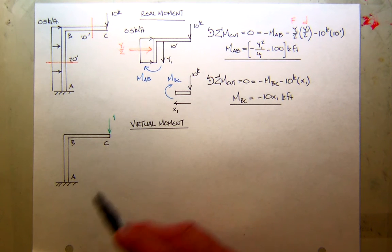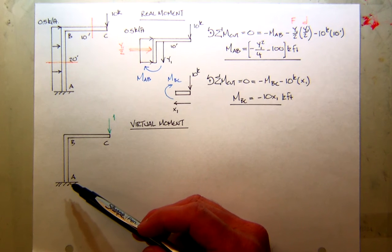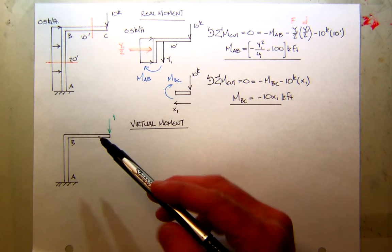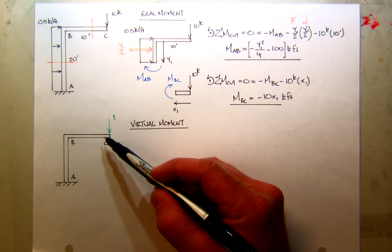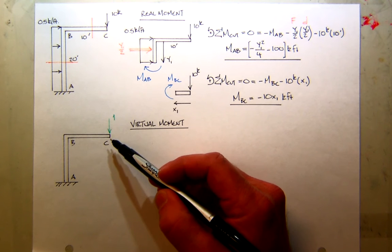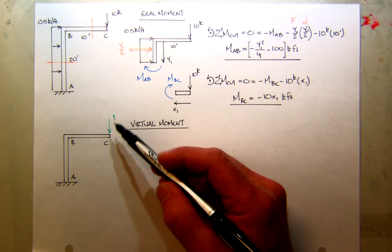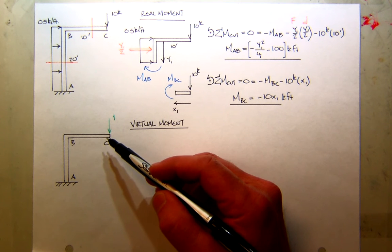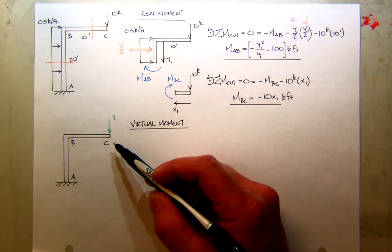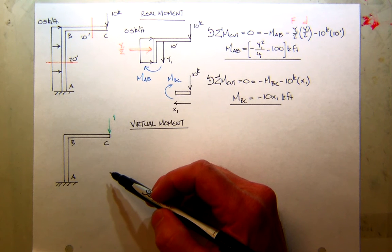We have our real moments, and when we last talked, we had just set up the virtual system. So it's the same geometry, but now I'm applying my virtual load, which is unit load, one. And at C, because that's where I want to know the displacement, and I'm assuming the force is down. So if I get a positive value, then C will move down.